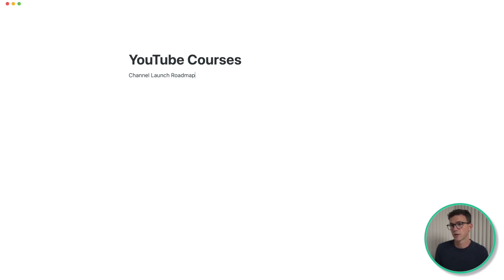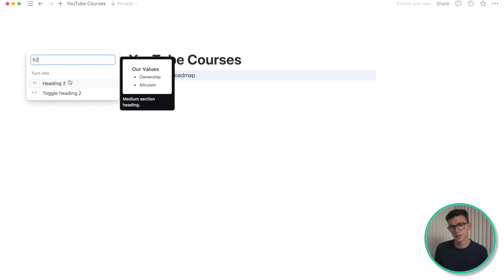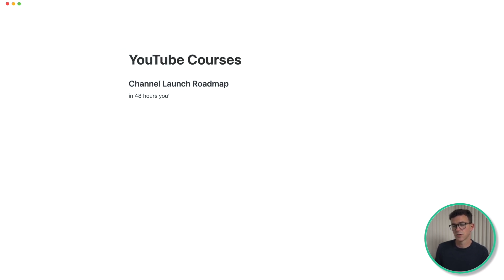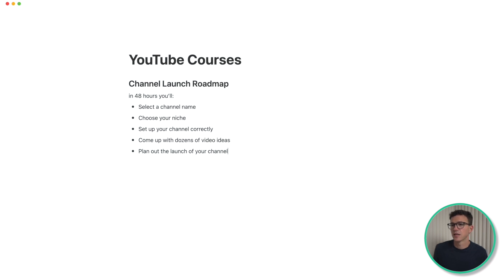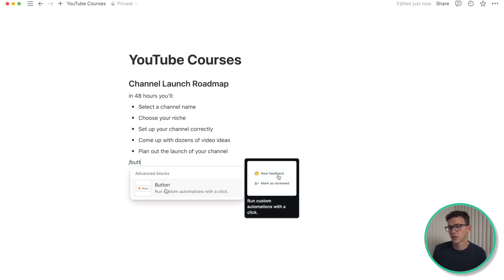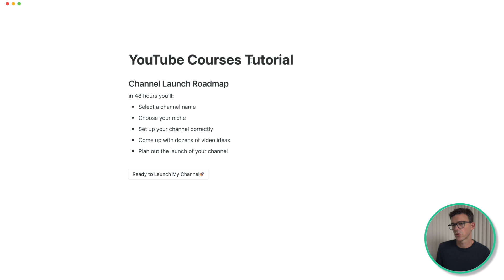Then let's add the next page for our YouTube courses. We're going to talk about Channel Launch Roadmap, our YouTube course for beginners. Change the course name to an H2 tag — YouTube Courses would be the H1 tag — and then create a quick description of what's included in the course. To add bullets, add a dash and space and it'll turn into a bullet. The list includes: select the channel name, choose your niche, set up your channel correctly, come up with dozens of video ideas, and plan out the launch of your channel. Let's add a button that will send people to the full sales page of Channel Launch Roadmap.